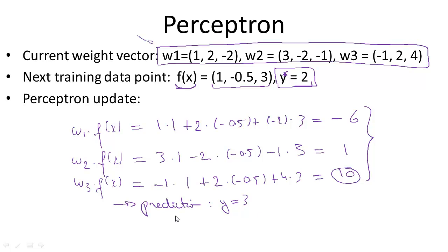What we need to do is update the weight vectors w2 and w3 to nudge them in the direction that w2 would favor this feature vector more than w3 would. Here's the update: w2 gets updated. w2 is the class we want, so we add f(x) to w2, which gives us a new w2 of (3, -2, -1) + (1, -0.5, 3), which equals (4, -2.5, 2).